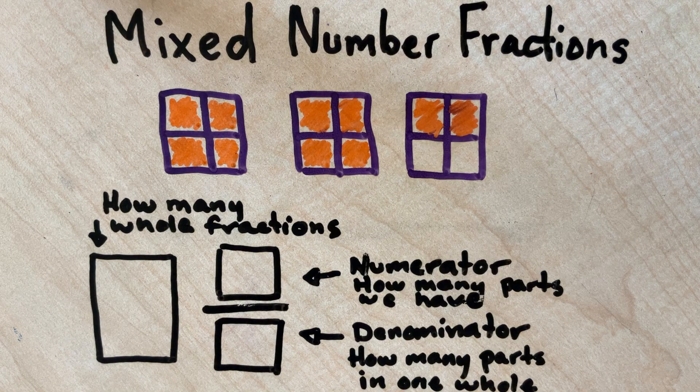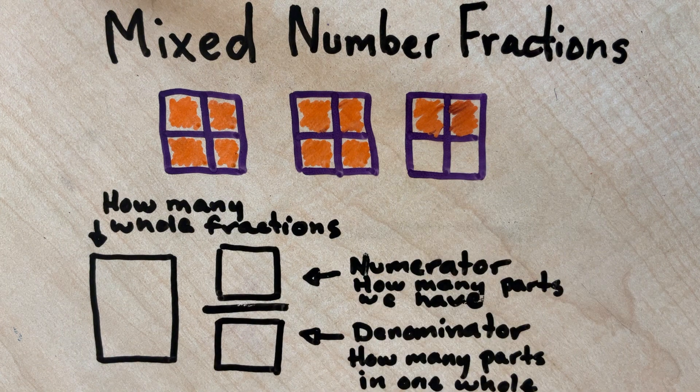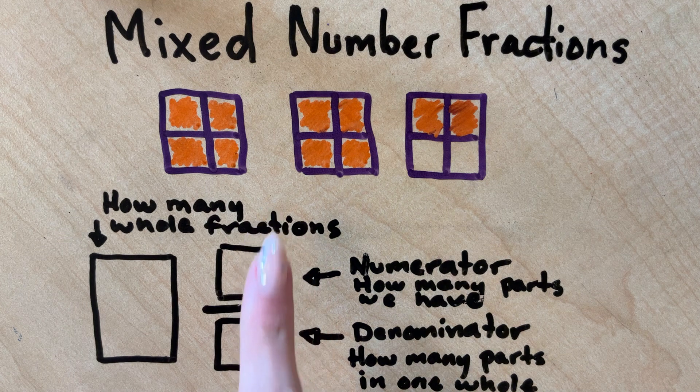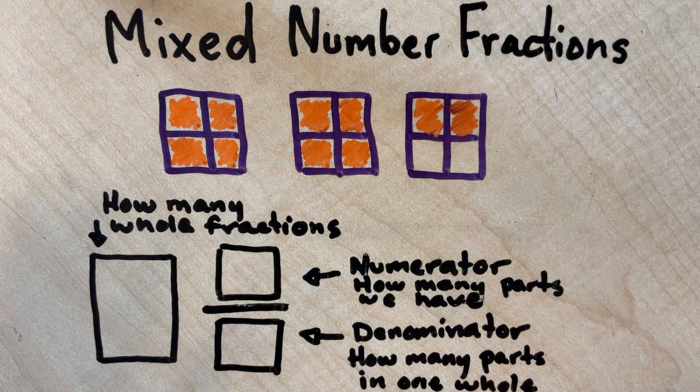In this short video, we're going to be talking about how to turn a fraction like this into a mixed number. A mixed number is when we have a whole number sitting right next to the fraction that is left over after we figure out how many wholes we have.